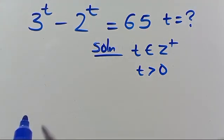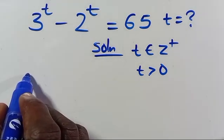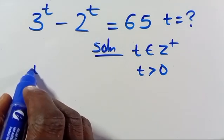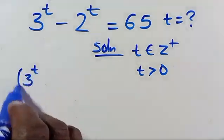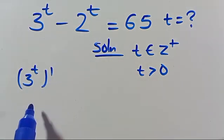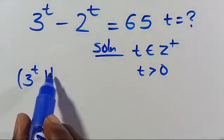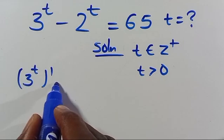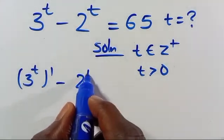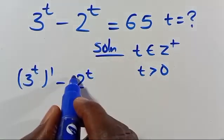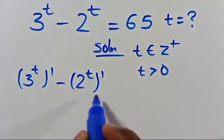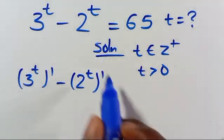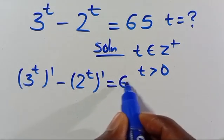So from here we have 3 to the power of t, which we can write in parenthesis to the power of 1. Since 1 times t gives us back our t, minus 2 to the power of t in parenthesis to the power of 1, and t times 1 gives us back our t, equals 65.